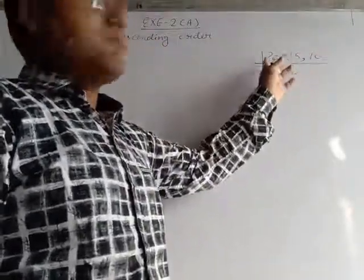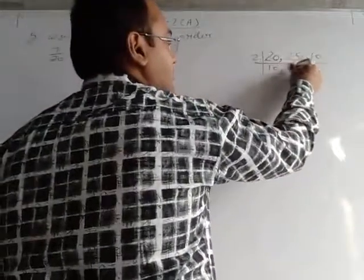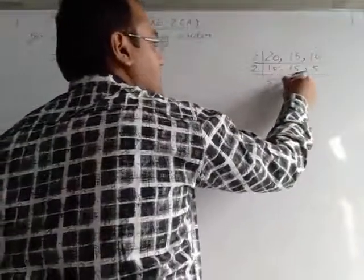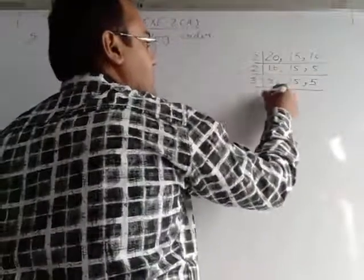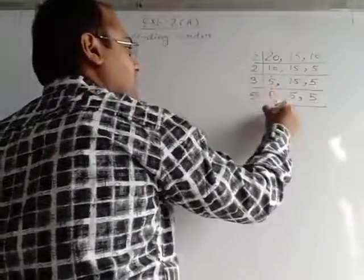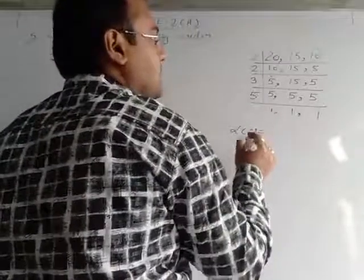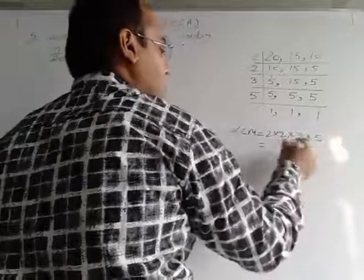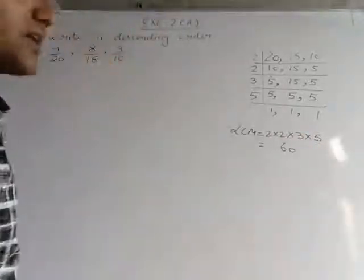We will find the LCM here. With the table of 2: dividing 20, 15, 10 — we get 10, 15, 5. Again with the table of 2: 5, 15, 5. With the table of 3: 5, 5, 5. Now with the table of 5: 1, 1, 1. So LCM is 2 × 2 × 3 × 5. On multiplying: 2×2=4, 4×3=12... wait, 3×5=15, 15×2=30, 30×2=60. So LCM is 60.